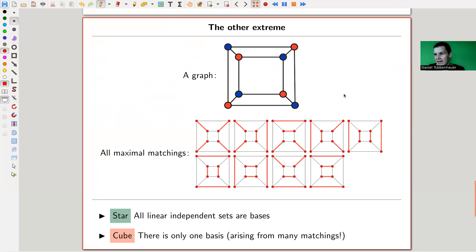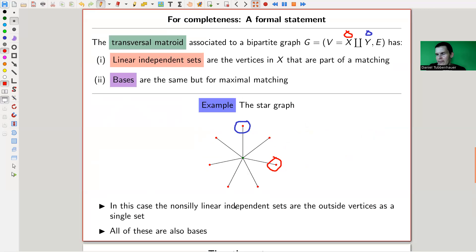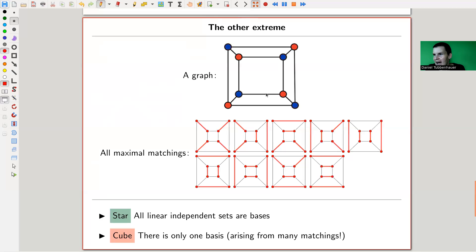Well, here is another example of a transversal matroid, kind of the other extreme. So here, everything is a basis. There are no non-trivial linear independent sets. And here is exactly the opposite. The other extreme, the graph from before. So in the star case, all non-trivial linear independent sets are bases. And for the cube graph, it's exactly the opposite.